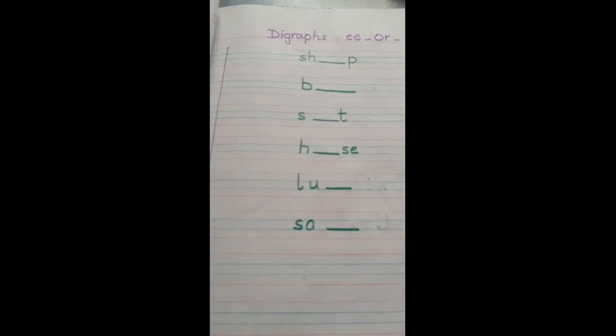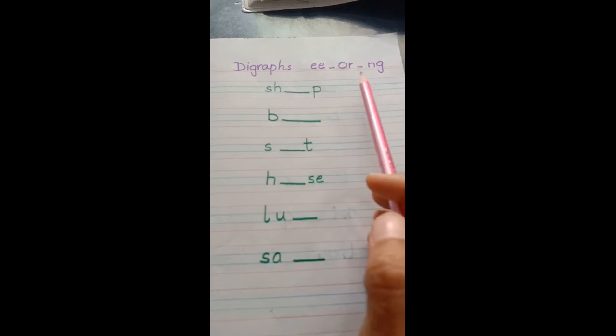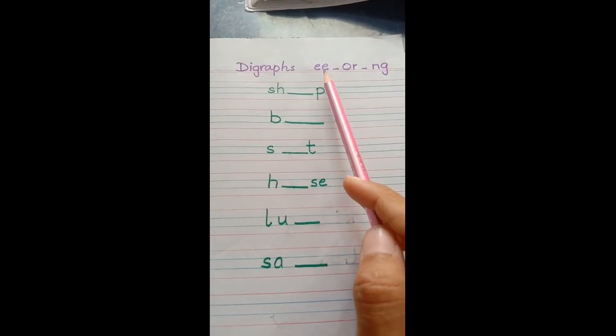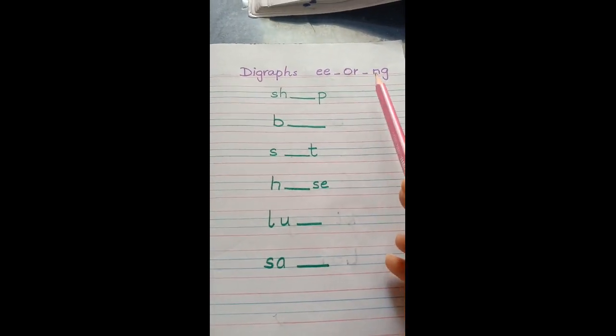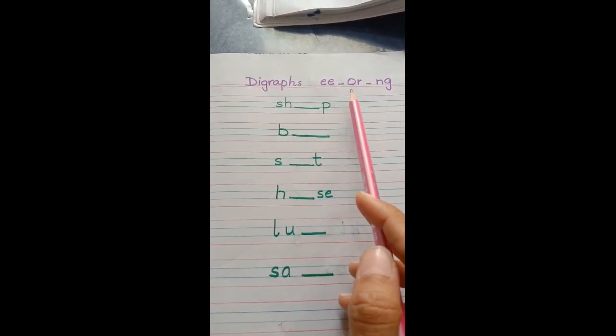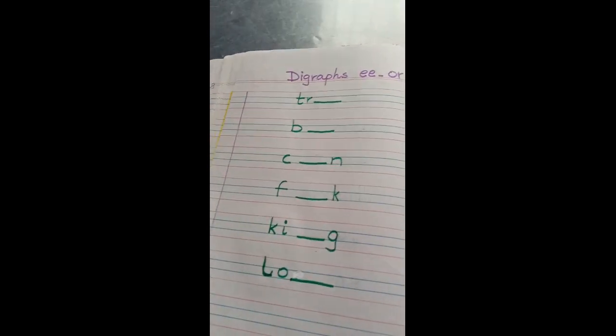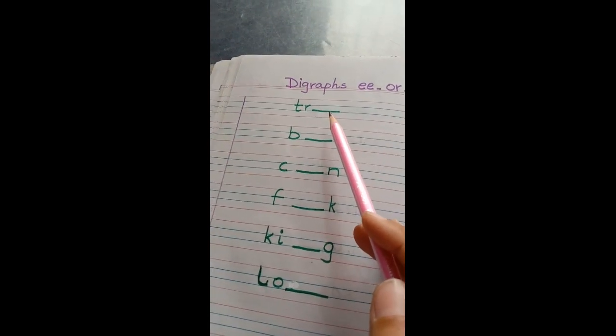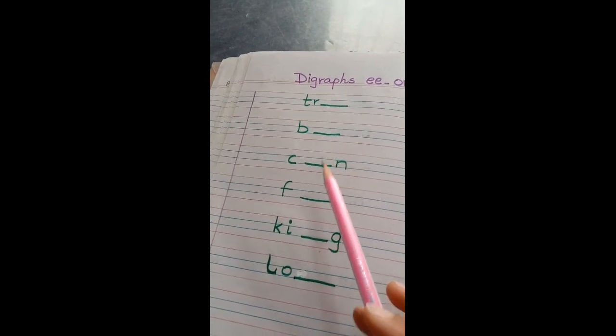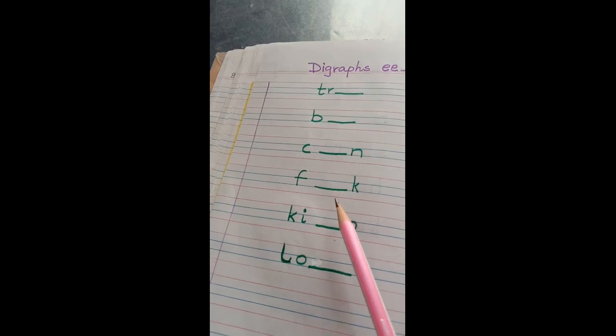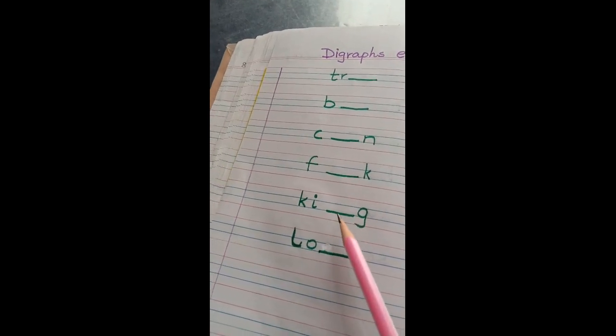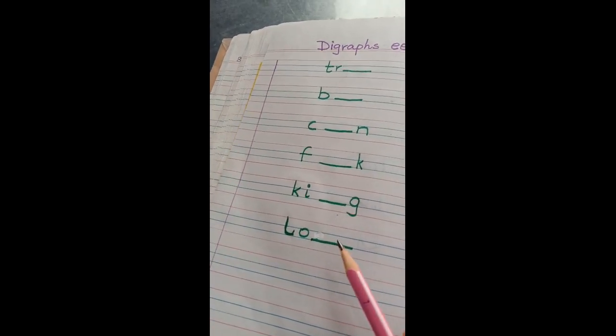And this is your English copy. We have three digraphs. E or ING. It's your class word and it's your home word. Tree. Bee. Corn. Four. King. Long.